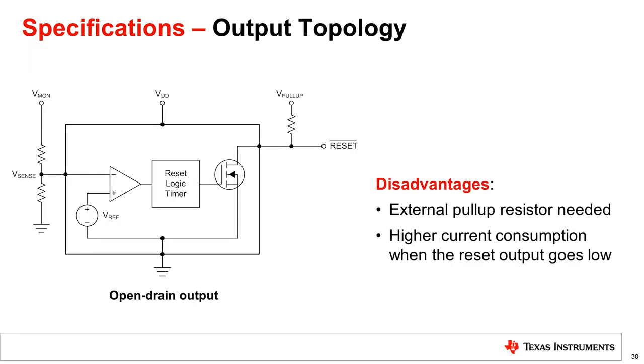One disadvantage of the open drain supervisor is its need for an external pull-up resistor which adds to cost as well as consume space on the board. Another disadvantage is the higher current consumption when a fault condition is present. During such a state, the N MOSFET is closed which pulls current through the pull-up resistor into ground resulting in the reset output going low. Due to this effect, power will be lost or dissipated.